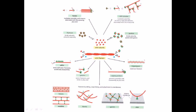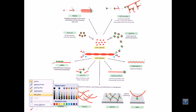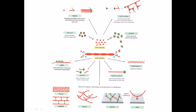Actin filament production from actin subunits is tightly regulated by different proteins. Some proteins help polymerize actin, others destabilize it. The protein formin nucleates and promotes assembly of growing actin filaments. When formin is present during actin filament assembly, it helps the cell make actin filaments more rapidly and produces stronger, straighter actin filaments.